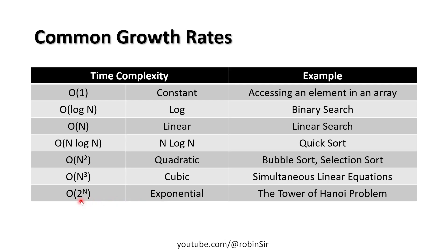That's all for this chapter. Computational complexity gives us the idea of the performance of an algorithm, mainly based on time and space. Time here mainly refers to how many steps the algorithm will take to solve a given problem. Thank you for watching — see you in the next class.